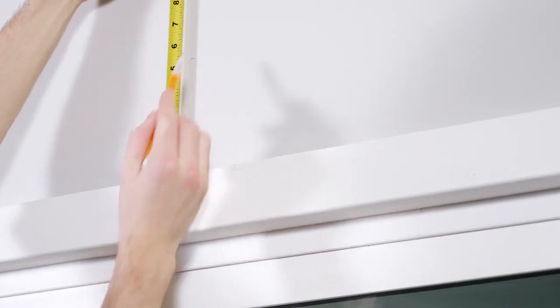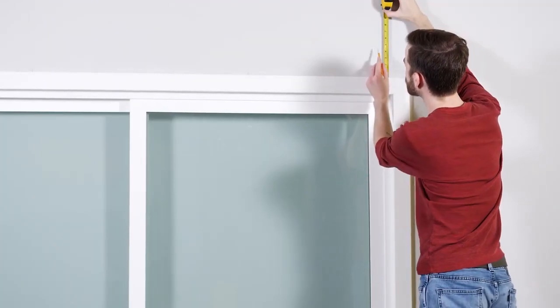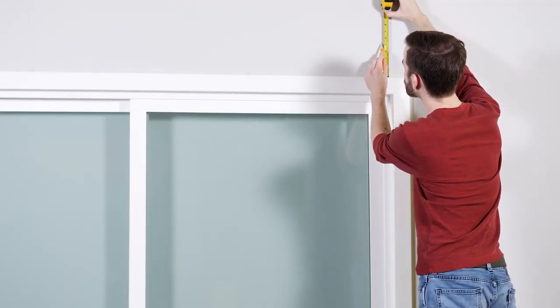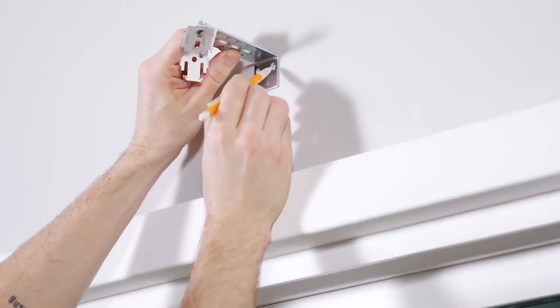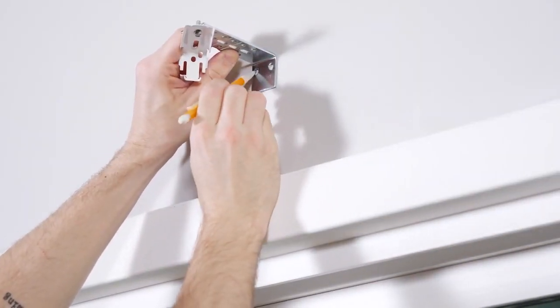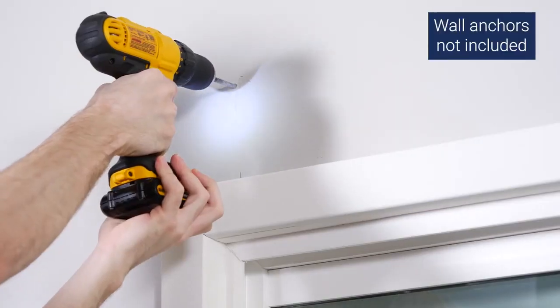Measure this distance above each of your previous marks and make another mark. If you're installing over a sliding glass door, add another quarter inch to make sure the shade clears the floor. Center the top of a bracket at each mark and use the holes to mark where the screws will go. Before inserting the screws, it's a good idea to pre-drill the holes first.